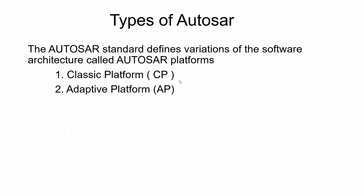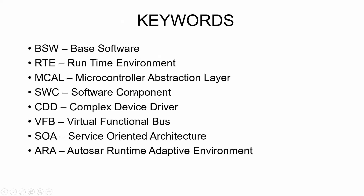The AutoSAR standard defines variations of the software architecture called AutoSAR platforms. There are two platforms: one is the Classic Platform, and the second one is the Adaptive Platform. Before going further, we have to understand some keywords that will be useful for the further videos: BSW – Base Software, RTE – Runtime Environment, MCAL – Microcontroller Abstraction Layer, SWC – Software Component, CDD – Complex Device Driver, VFB – Virtual Functional Bus, SOA – Service Oriented Architecture, ARA – AutoSAR Runtime for Adaptive Applications.